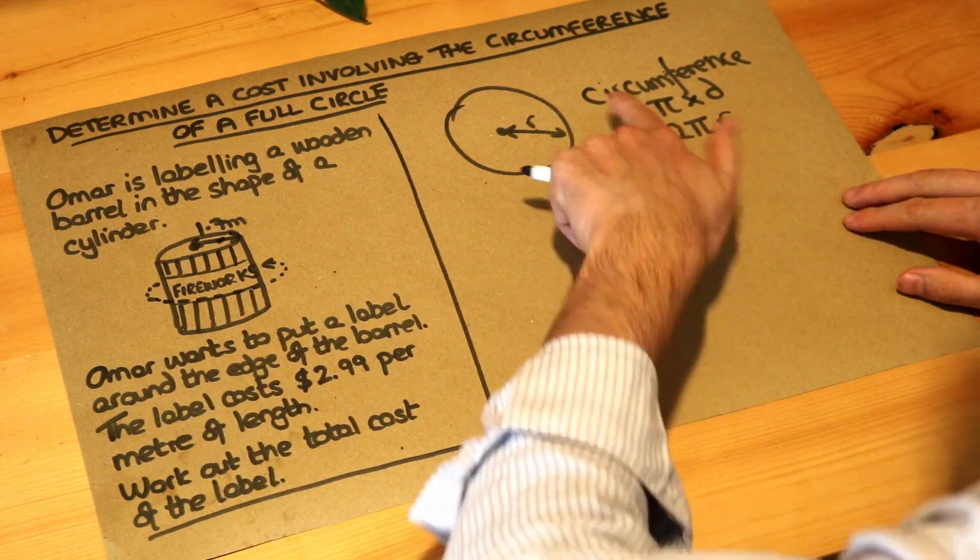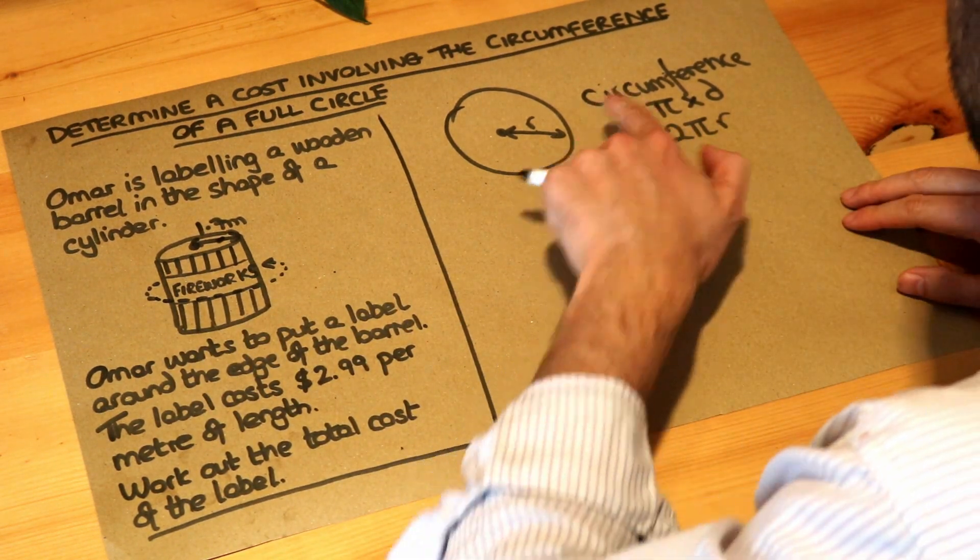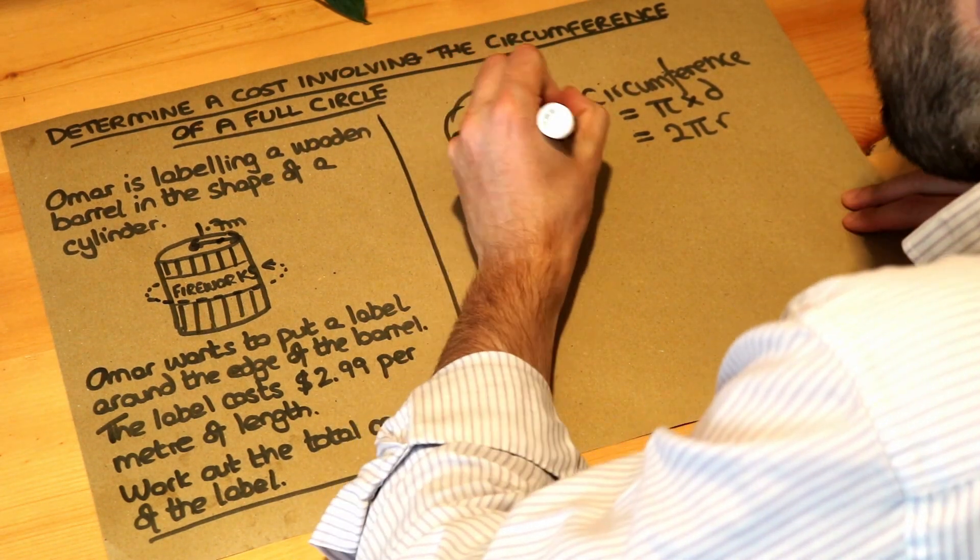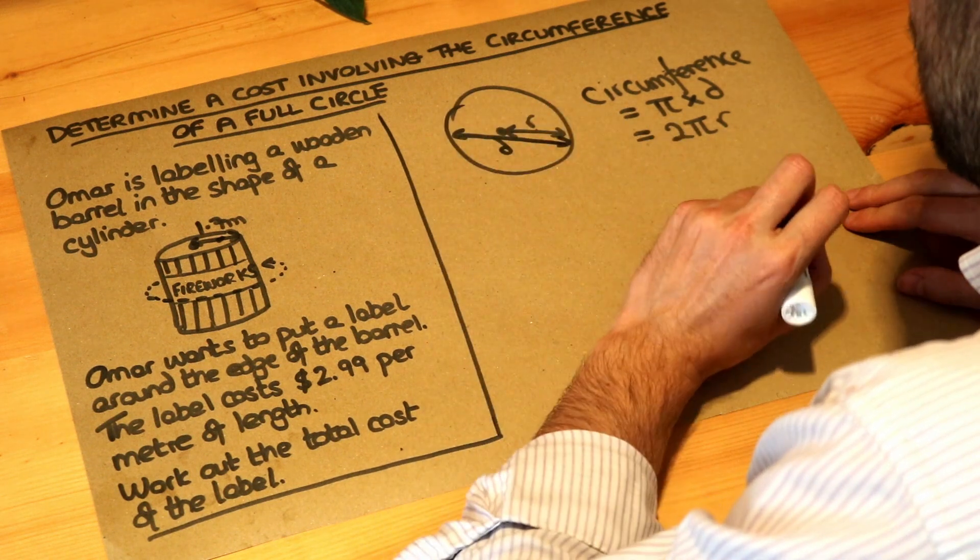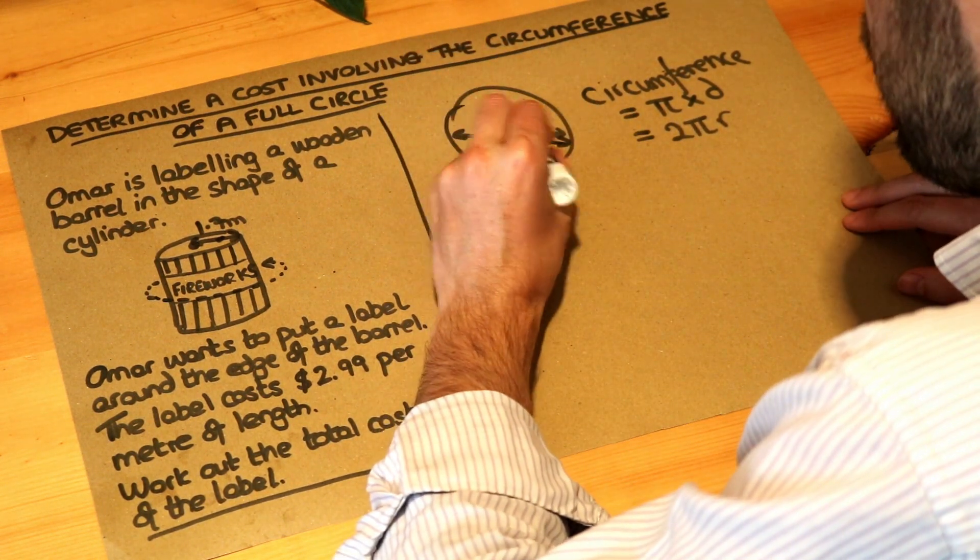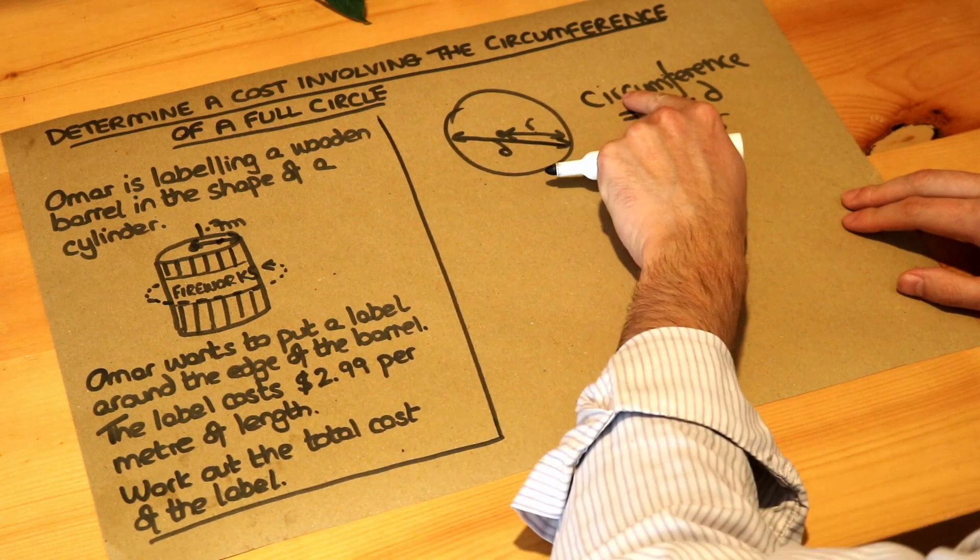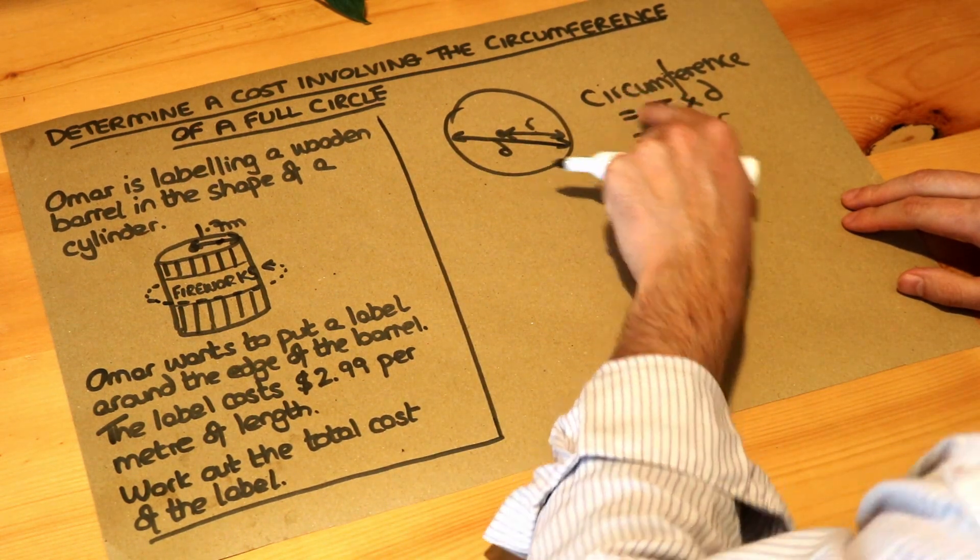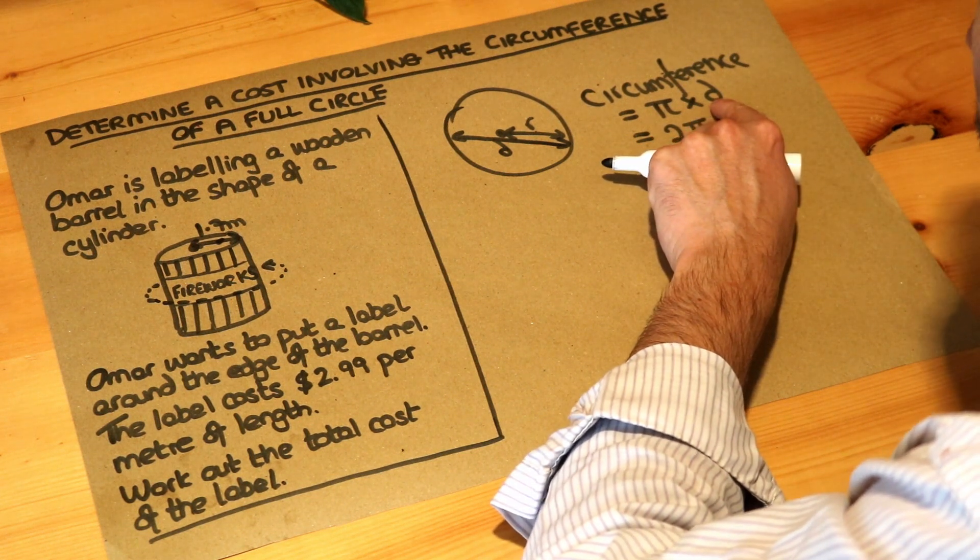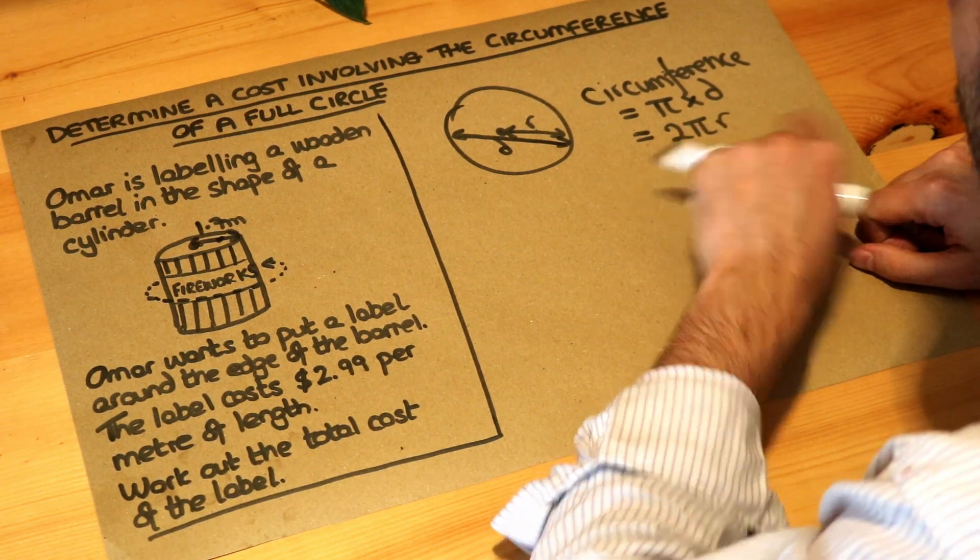And remember how we find the circumference of a circle. If we know the radius of the circle or we know the diameter, which is the length from one end of the circle to the opposite end. Remember the diameter is just two times the radius because you've got radius, radius, two lots of radius is diameter. The circumference or perimeter of the circle is either pi times the diameter, so πd, or it's 2πr where r is the radius.